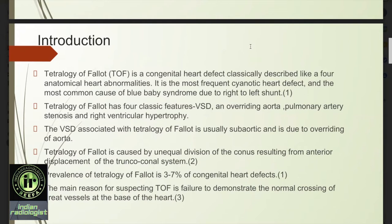The VSD associated with Tetralogy of Fallot is usually sub-aortic and is due to overriding of the aorta. TOF is caused by unequal division of the conus resulting from anterior displacement of the truncoconal system. Prevalence of Tetralogy of Fallot is 3–7% of congenital heart defects. The main reason for suspecting TOF is failure to demonstrate the normal crossing of great vessels at the base of the heart.